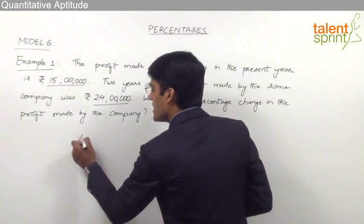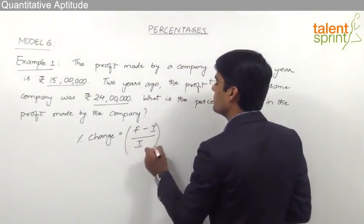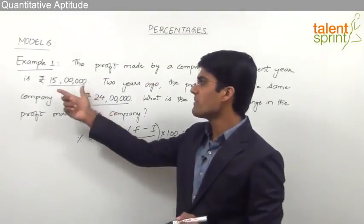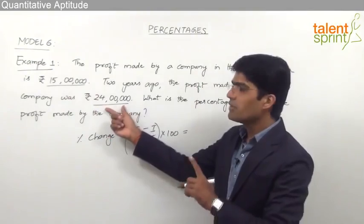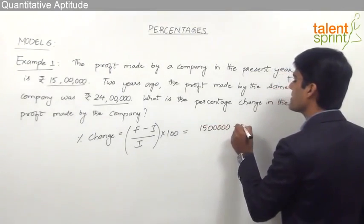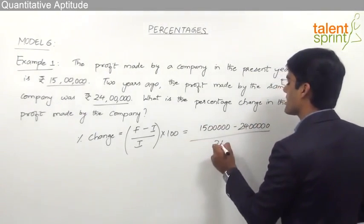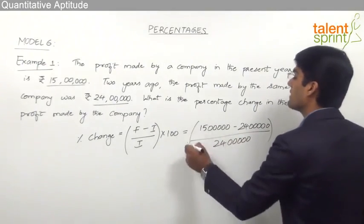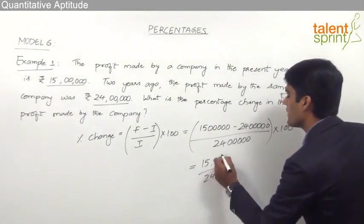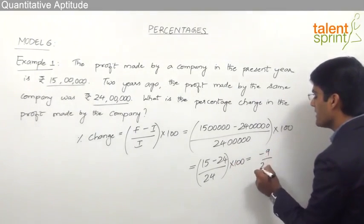We know that percentage change is nothing but final value minus initial value, by initial value, into 100. In this question, the final value is the present profit — rupees 15 lakhs — and the initial value is the profit two years ago — 24 lakhs. So the percentage change will be: 15 lakhs minus 24 lakhs, divided by 24 lakhs, into 100. That is 15 minus 24 by 24 into 100 (as lakhs cancels out), which equals minus 9 by 24 into 100.